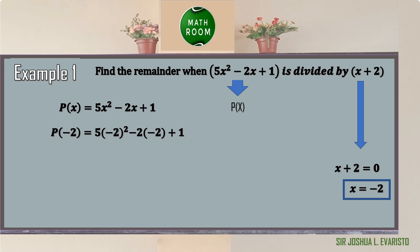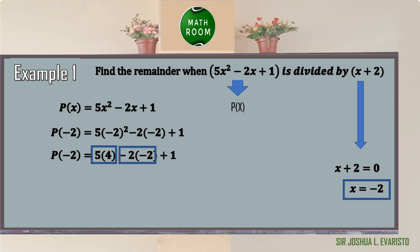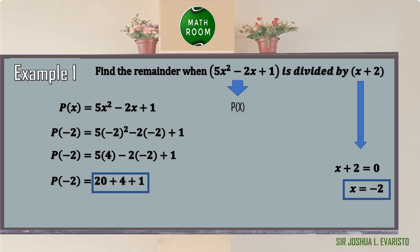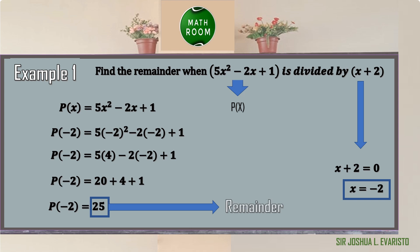We can now solve. Let's start with the exponent: negative 2 squared is equal to 4. So the resulting equation is p of negative 2 is equal to 5 times 4 minus 2 times negative 2 plus 1. Proceeding with multiplication: 5 times 4 is equal to 20, and negative 2 times negative 2 is equal to positive 4. So we have 20 plus 4 plus 1. Then 20 plus 4 plus 1 is equal to 25, which means p of negative 2 is equal to 25, or the remainder is simply 25.